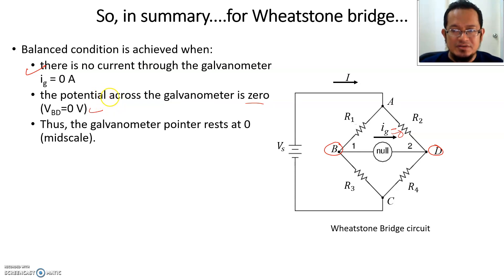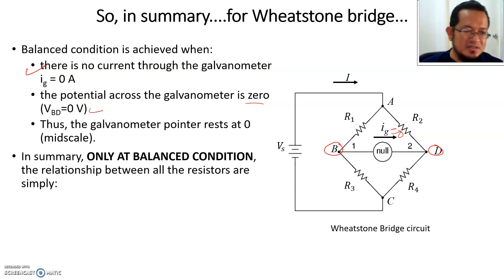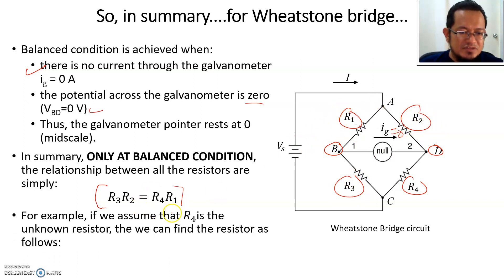The voltage between B and D must equal zero, so there will be no deflection. When the galvanometer has no deflection, then the bridge is in balanced condition. With these conditions met, the galvanometer pointer will rest at zero mid-scale. Only at balanced condition, the relationship between all resistors is R1 × R4 = R3 × R2. If R4 is the unknown resistor, you can find it by manipulating this formula.